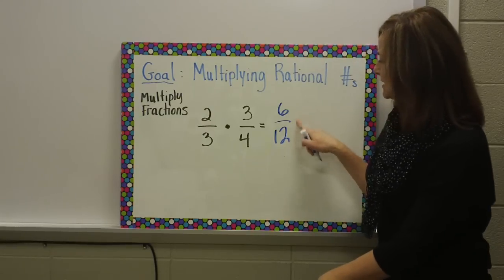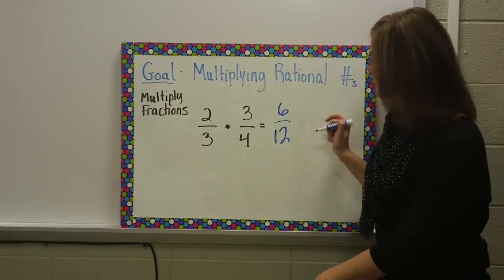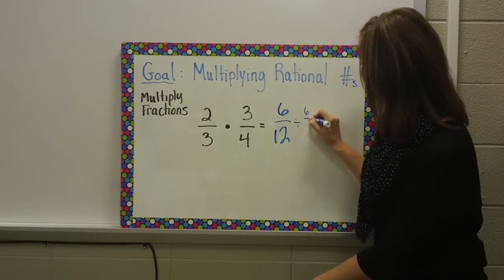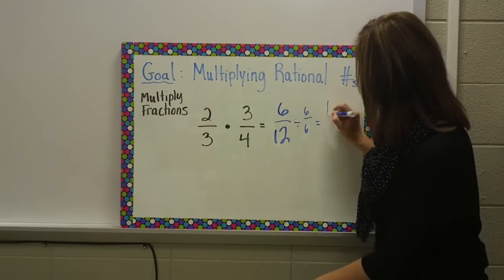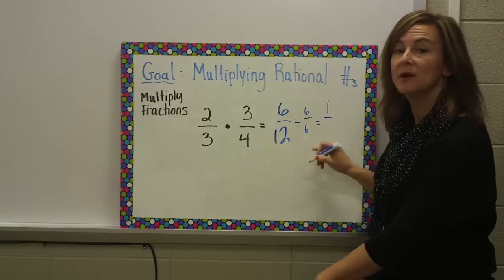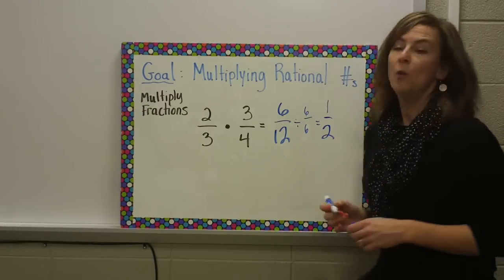Your last step is going to be to simplify. I can divide both six and twelve by six. So that's going to leave me with six divided by six is one, twelve divided by six is two, with one-half.